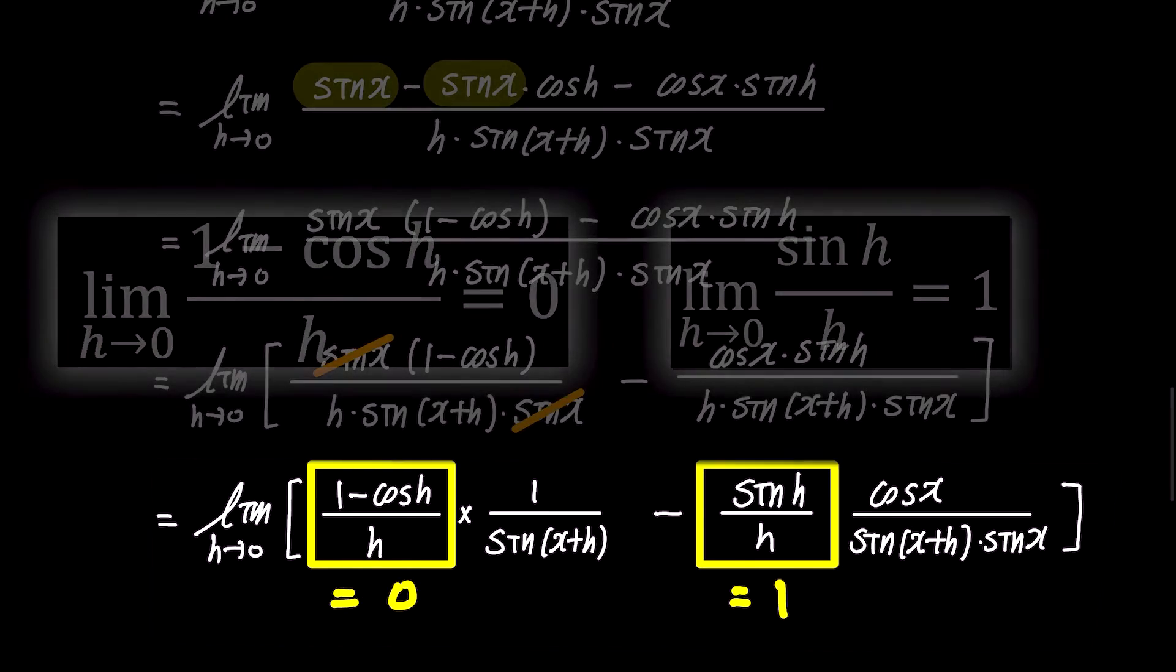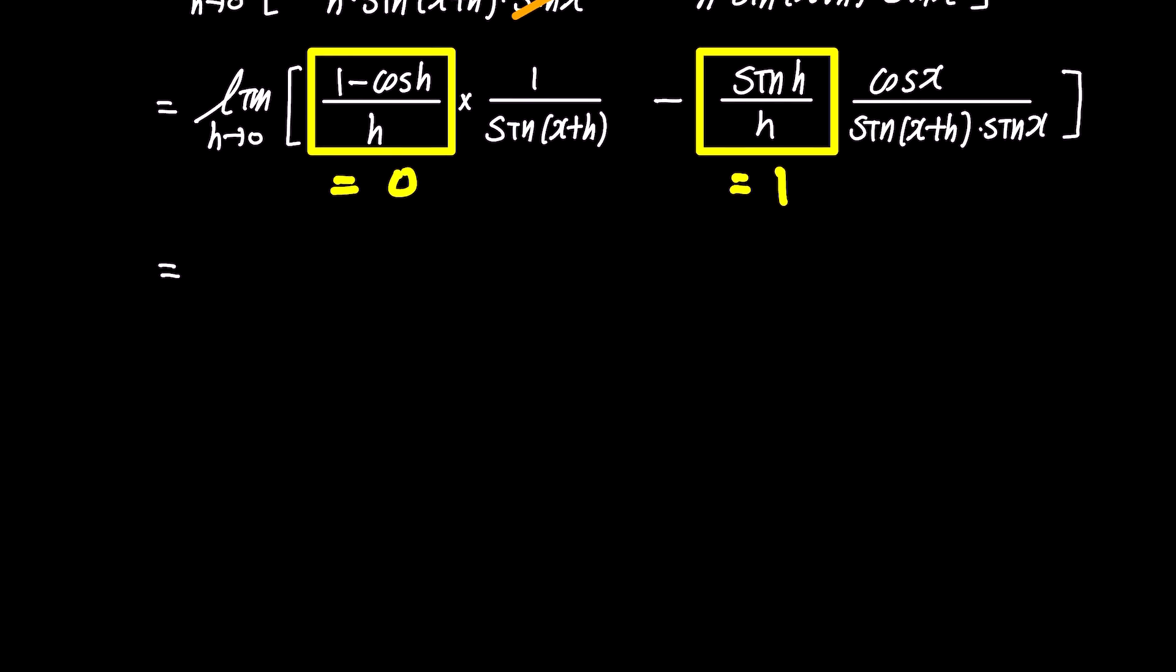Using these results, let's simplify the expression. Since h approaches 0 in the limit, h in sin x plus h becomes 0, resulting in sin x. Therefore, the expression becomes 0 times 1 over sin x minus 1 times cos x over sin x times sin x.